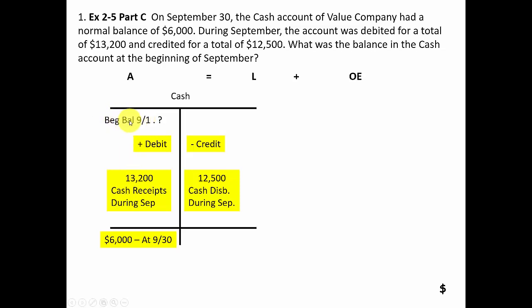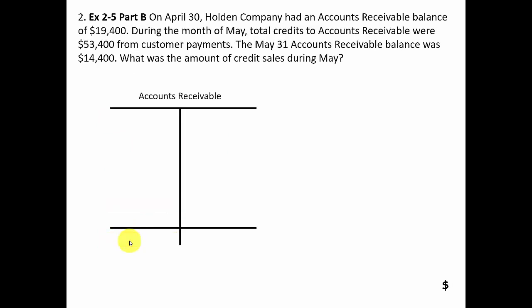Therefore the beginning balance is seven hundred dollars lower than the ending balance, making the beginning balance fifty-three hundred dollars. That's because fifty-three hundred plus thirteen thousand two hundred minus twelve thousand five hundred equals six thousand dollars. Question two: we're now analyzing an accounts receivable account, also an asset account.